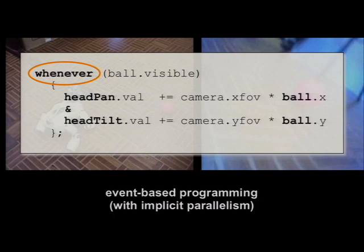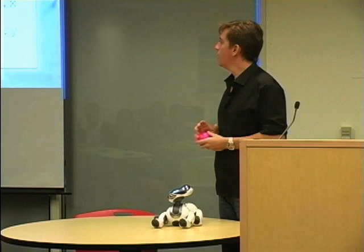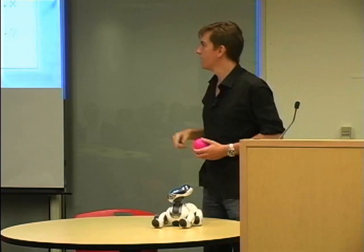There's also implicit parallelism here. If you have hundreds of 'whenever' constructs in your code and they trigger at the same time, the code has to execute in parallel. You also have explicit parallelism with the '&' symbol. The semicolon has the traditional sequential meaning, but with '&' you can say you want two pieces of code to execute in parallel — starting at exactly the same time. Here we want the headpan and head-tilt motors to move in parallel.